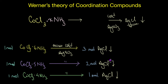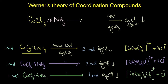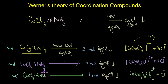Based on conductivity studies, Werner proposed the following formulas for these cobalt complexes: [Co(NH3)6]³⁺ + 3Cl⁻, corresponding to a 1:3 electrolyte. Similarly, CoCl3·5NH3 and CoCl3·4NH3 were formulated as [Co(NH3)5Cl]²⁺ + 2Cl⁻ and [Co(NH3)4Cl2]⁺ + Cl⁻, whose conductivities corresponded to 1:2 and 1:1 electrolytes respectively.